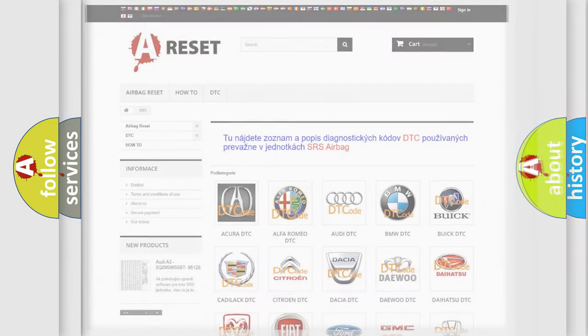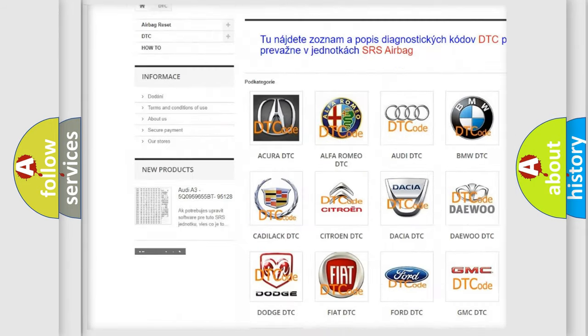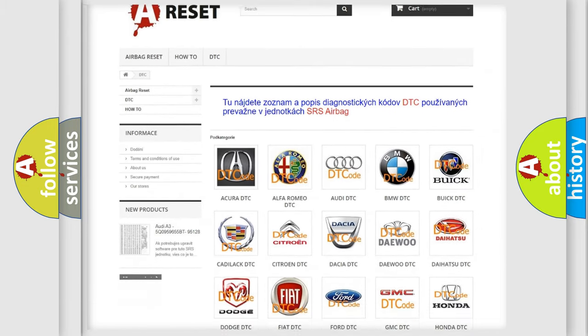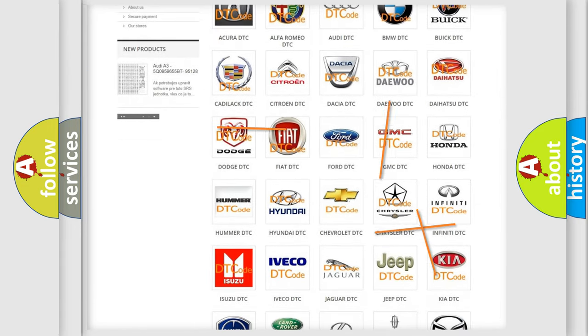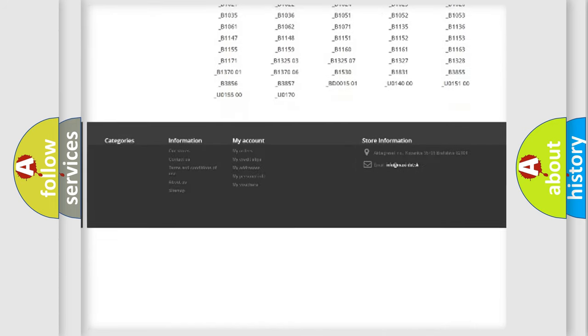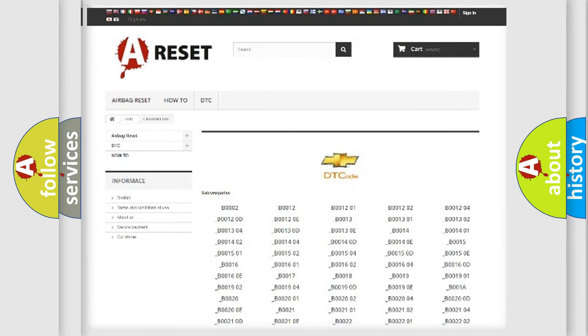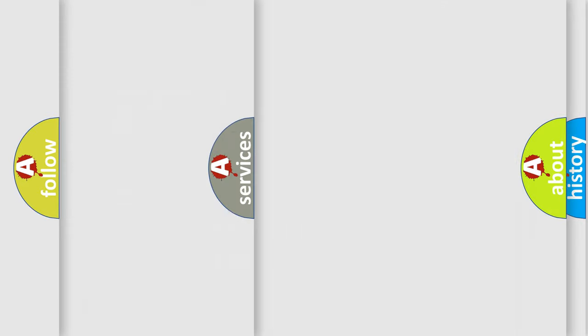Our website airbagreset.sk produces useful videos for you. You do not have to go through the OBD2 protocol anymore to know how to troubleshoot any car breakdown. You will find all the diagnostic codes that can be diagnosed in Chevrolet vehicles, and also many other useful things.